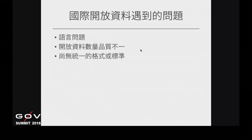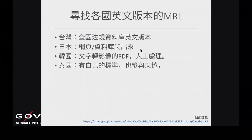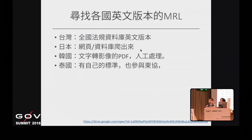亞洲跨國協會這邊有繼續在努力這件事情。我們回到自己的主題，就是要找各國英文版本的農藥殘留標準。因為農藥殘留標準是跨國貿易所需要的資料，所以除了政府開放資料之外，也有別的管道可以取得。